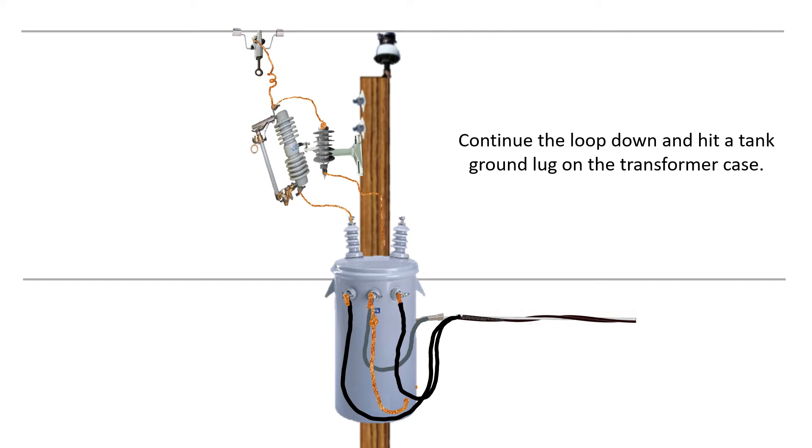On this one, we have the ground loop started at the X2 bushing. We're going to go down, hit the lug directly below the X2 bushing. If you have transformers that have ground straps on them, you wouldn't need to do this. There would be a bolted strap that would go up to the backside of the lug on the X2 bushing. If you don't have that, just put a tank ground in that lug itself.